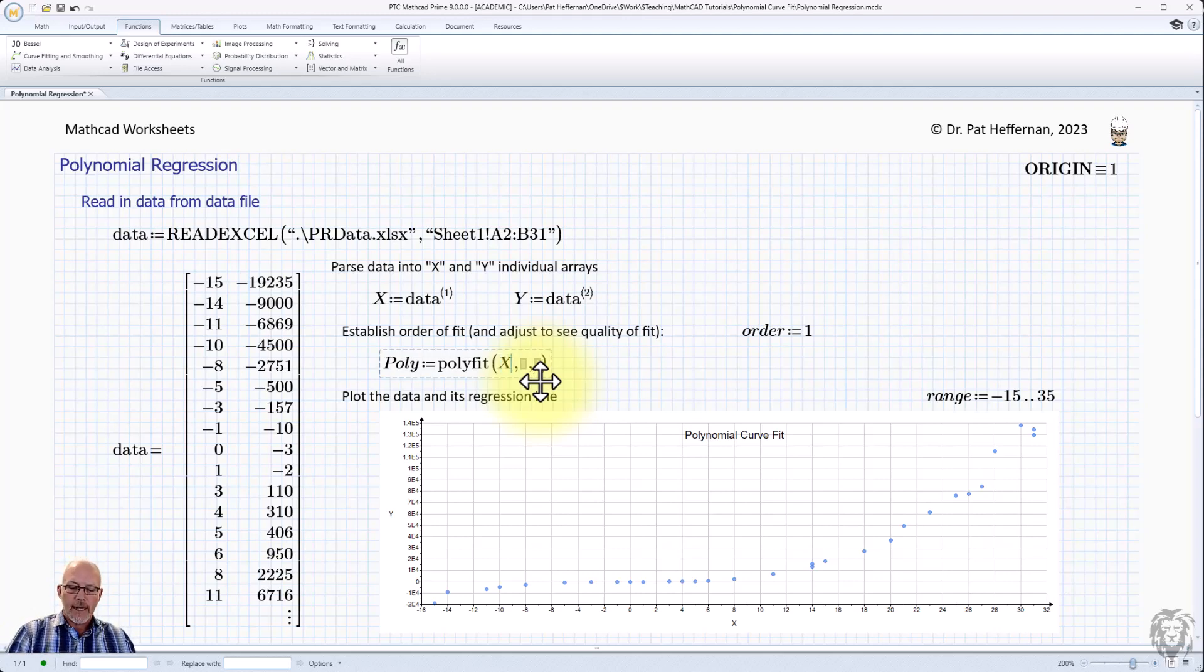Now it needs three parameters as inputs. So the first thing it needs is the x data. The second one is the y data. And the third one is the order that you would like it to fit. And so because I've set it up separately, I'm just going to put it in as the variable order. And there we go.